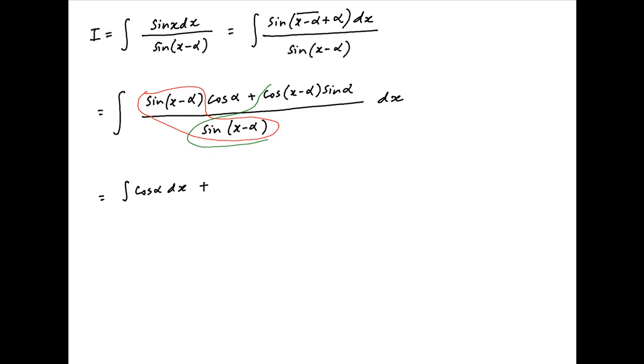In the second term, cos of x minus alpha is divided by sine of x minus alpha resulting in cot of x minus alpha, and therefore the second term is equal to integral of cot of x minus alpha times sine alpha dx.